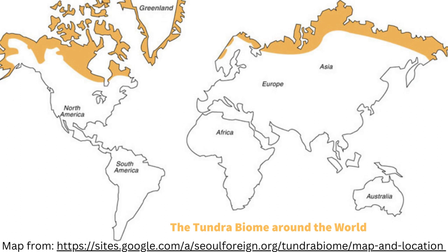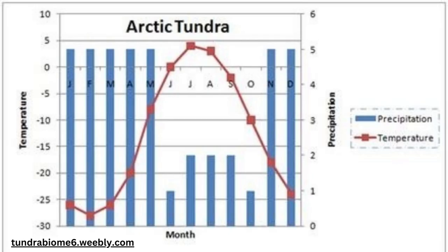The tundra is a treeless biome where the climate is cold and windy and rain is scant. The tundra is covered in snow for much of the year, but summer can bring on beautiful bursts of wildflowers. The tundra has an annual rainfall average of anywhere from 15 to 25 centimeters. The average summer temperature is anywhere from negative 34 to 12 degrees Celsius, and during the winter, temperatures can get as low as negative 50 degrees Celsius.